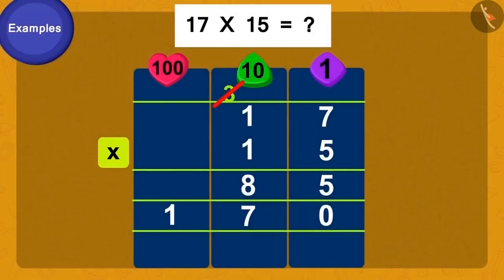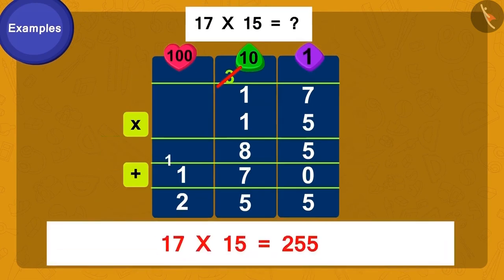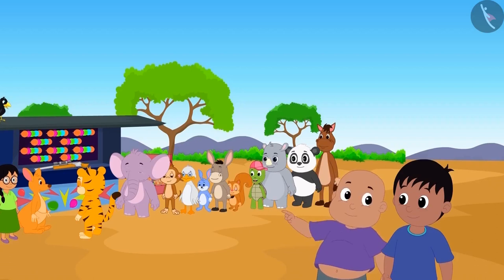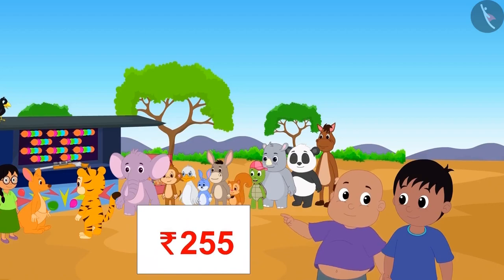Now it's very easy. Simply add 170 to 85. What do we get? 255. Doing this, we get our answer: 17 times 15 is 255. Raju and Bablu will have to pay a total of 255 rupees.